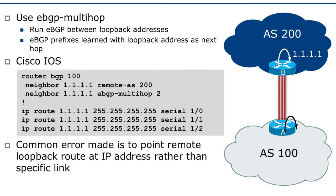A common error that folks make is to point the remote loopback route at an IP address rather than the specific link. The remote IP address could be reachable some other way — suppose AS100 is connected to AS200 through some other path. The eBGP multi-hop will quite happily function through that other route, meaning the three parallel links shown in the diagram may be down but the BGP session may continue to function. This is not a situation that we want.